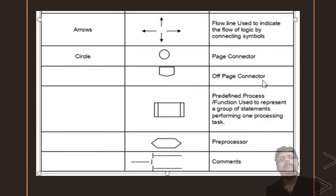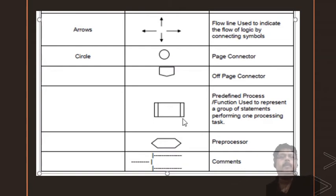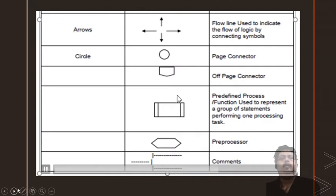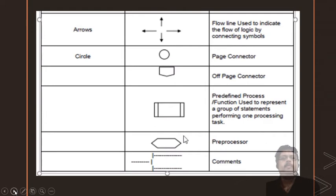Similarly, you have an off-page connector that is used to connect between two pages — if the flowchart continues on the next page, you can use an off-page connector. If your program has a function, you can use a rectangle with additional rectangular boxes on the sides to define it as a function call as well as to define the function itself. Pre-processors use a different symbol, and it is sometimes used for a for loop as well. For defining a comment, you use yet another specific symbol. This is how you use the symbols in a flowchart.